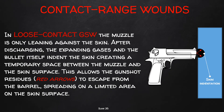In loose contact wounds, the muzzle is still in contact with the skin but the gun is only leaning against it — there is no hard contact. After discharge, the expanding gases and bullet indent the skin, creating a temporary space between the muzzle and skin surface. This temporary space allows gunshot residue to escape from the barrel and spread circumferentially around the central defect on the skin surface.